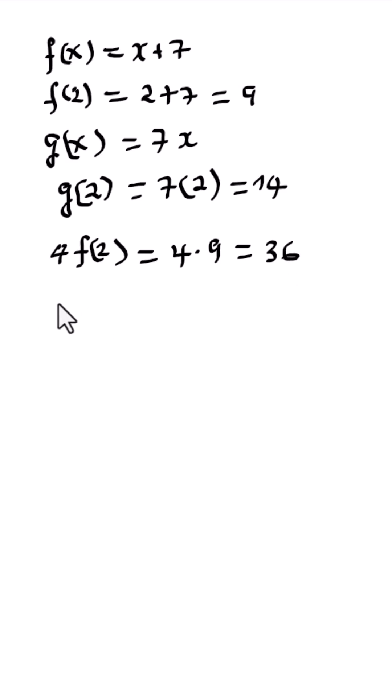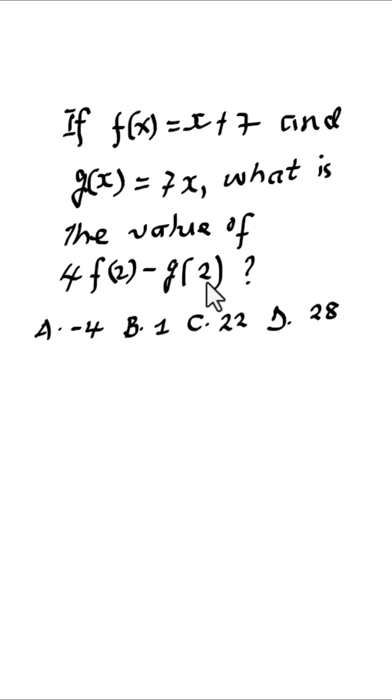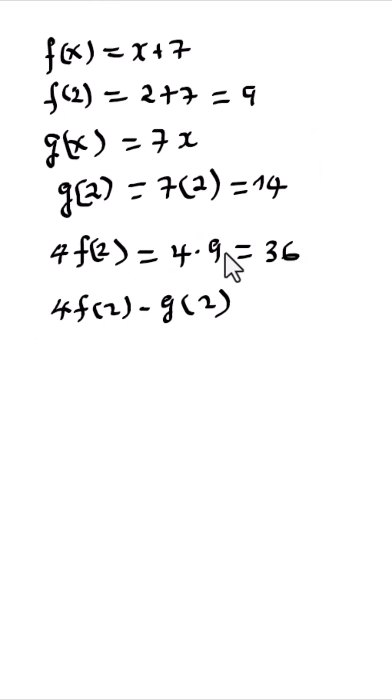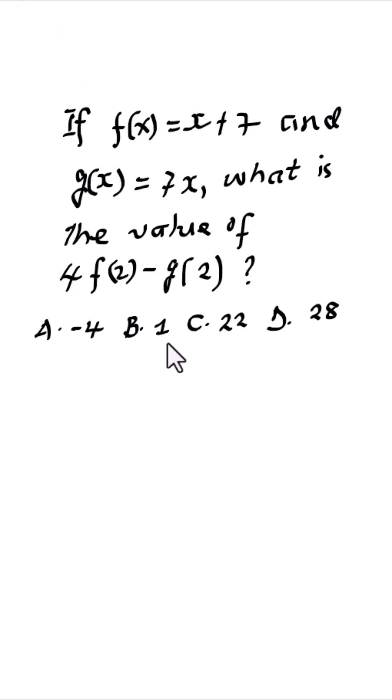And therefore, 4 f of 2 minus g of 2 as we are given in the problem here is equal to 36 minus 14. This is equal to 22. So the answer to this problem is C, 22.